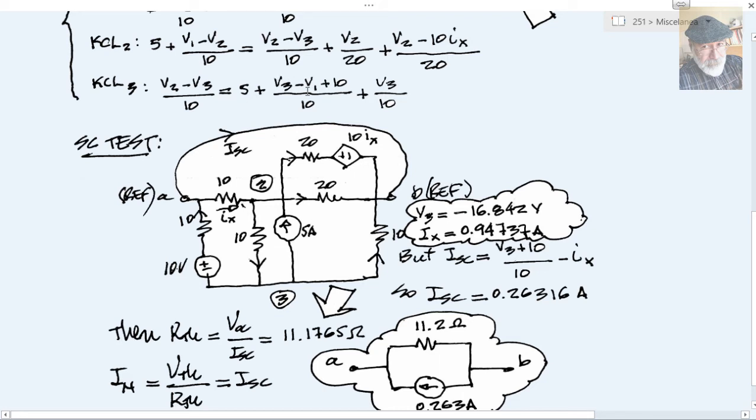From the system of equations we solve for V3, negative 16.8 volts, that is the voltage down here, and Ix which is 0.9 amps. We perform the operation and get the short circuit current being 0.263 amps.